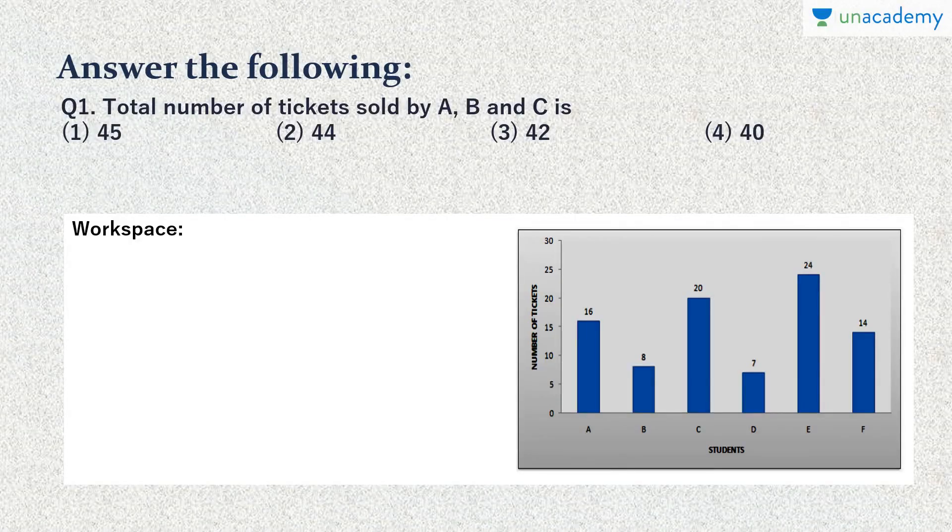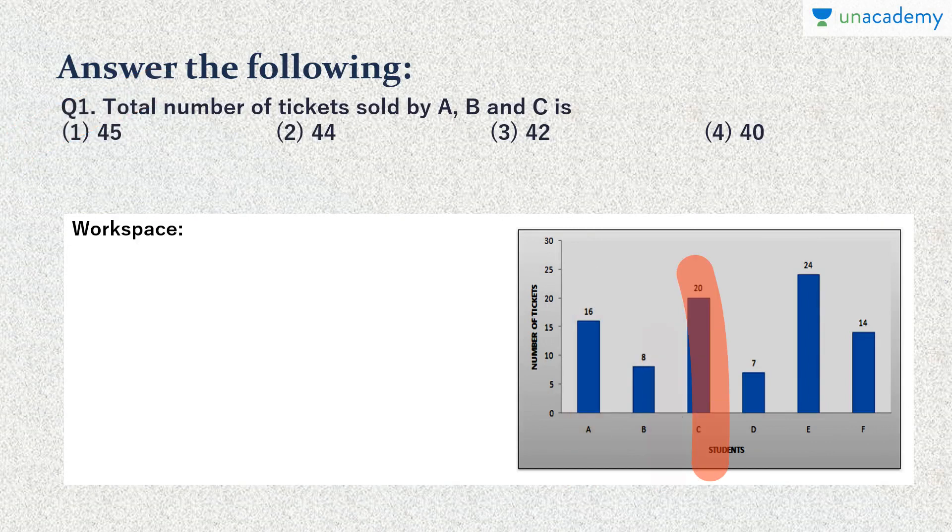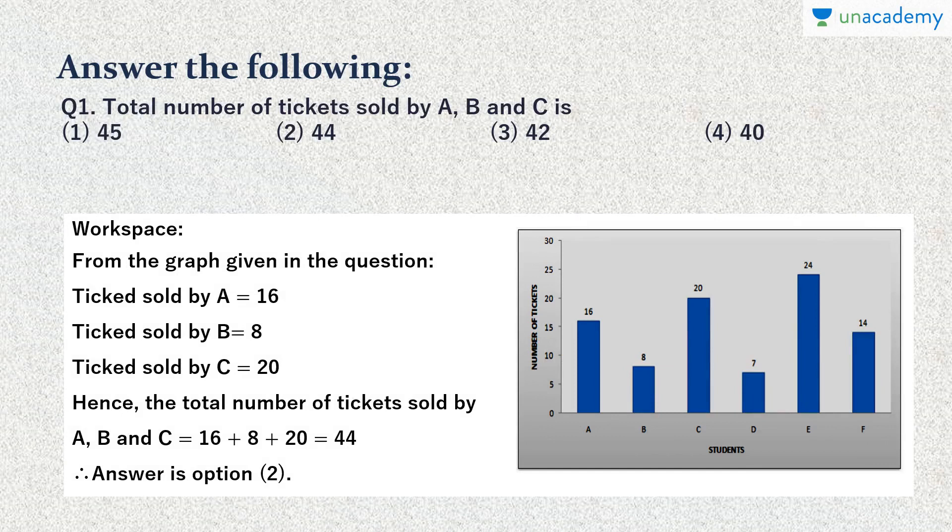Question one: Total number of tickets sold by A, B, and C is? As we can see from the graph, A is 16 tickets, B is 8, and C is 20. All we have to do is just add up these numbers to get the total. So here, 16 plus 8 plus 20, we get 44, which is our option number 2.